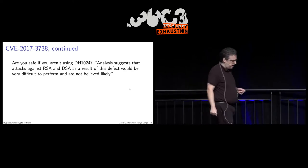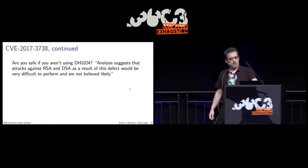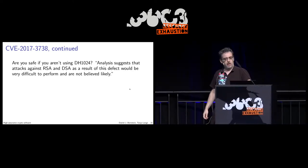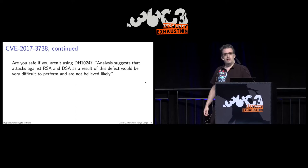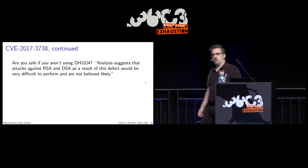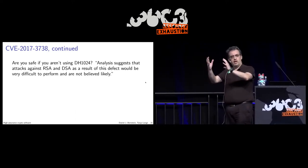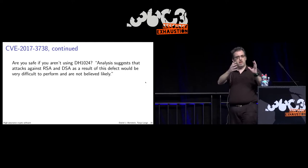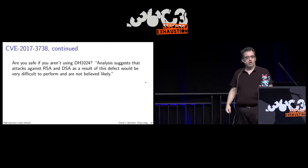They use the same subroutine, the same function. The advisory says that attacks on RSA and DSA will still be quite difficult to carry out — unlikely, improbable.